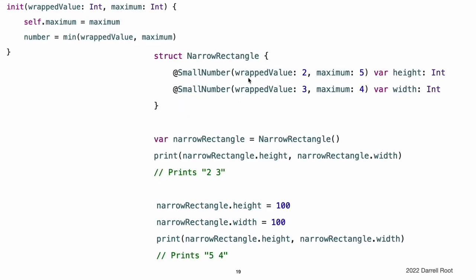When you write arguments in parentheses after the custom attribute, Swift uses the initializer that accepts those arguments to set up the wrapper. For example, if you provide an initial value and a maximum value, Swift uses the init(wrappedValue:maximum:) initializer. The instance of SmallNumber that wraps height is created by calling SmallNumber(wrappedValue: 2, maximum: 5), and the instance that wraps width is created by calling SmallNumber(wrappedValue: 3, maximum: 4).